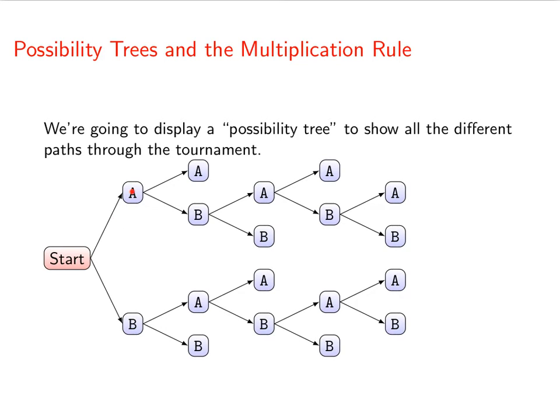So here's one path through there. We could go A, B, A, B, A. Nobody ever won two straight games, but at the end, player A won three games total and so they win the tournament.